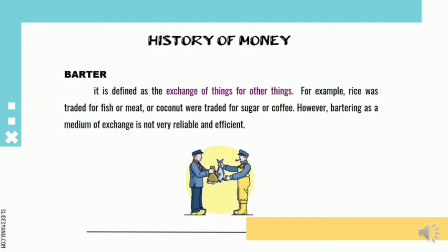However, as society evolved, the habits and ways of life of men changed. Men found the need to exchange what they produced for what they needed, and this is when barter came into practice. Barter is defined as the exchange of things for other things.